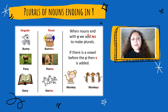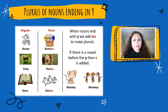When nouns end with Y, we add IES to make plurals. For example: bunny, bunnies; pony, ponies; story, stories. If there is a vowel before the Y, then S is added. For example: monkey, monkeys.